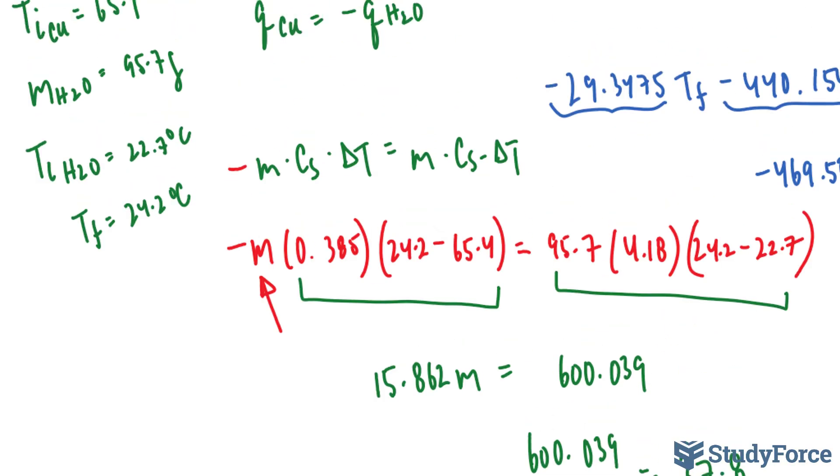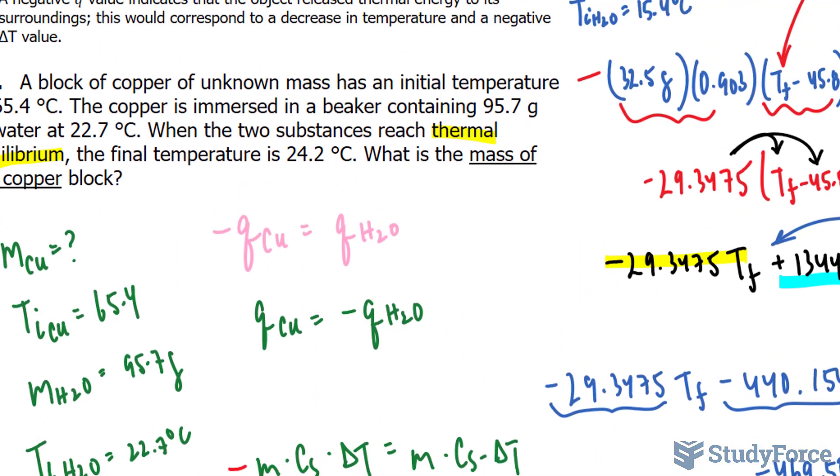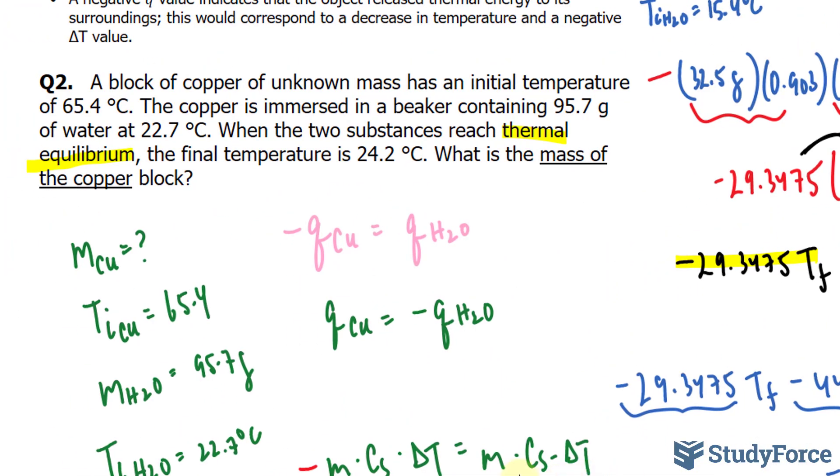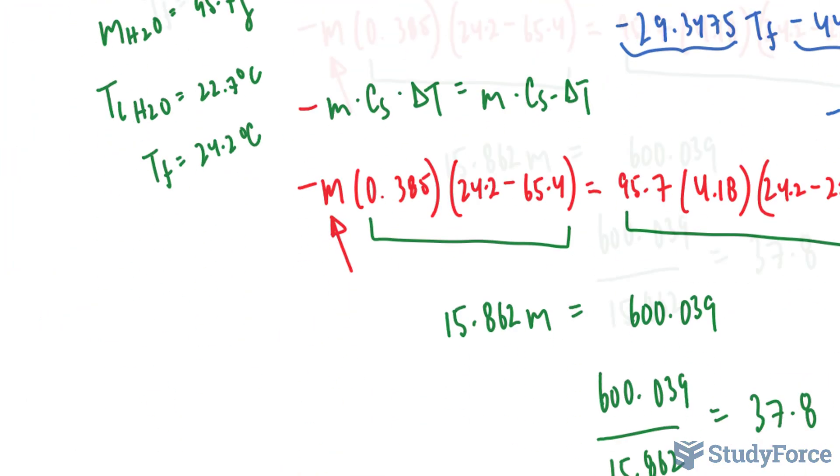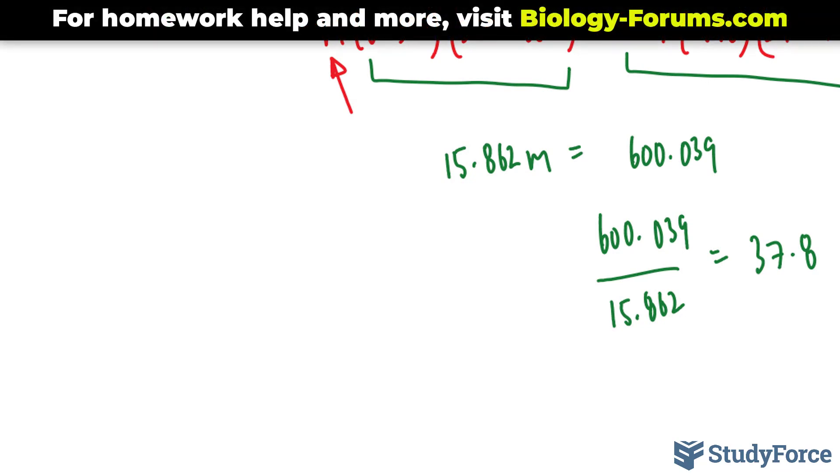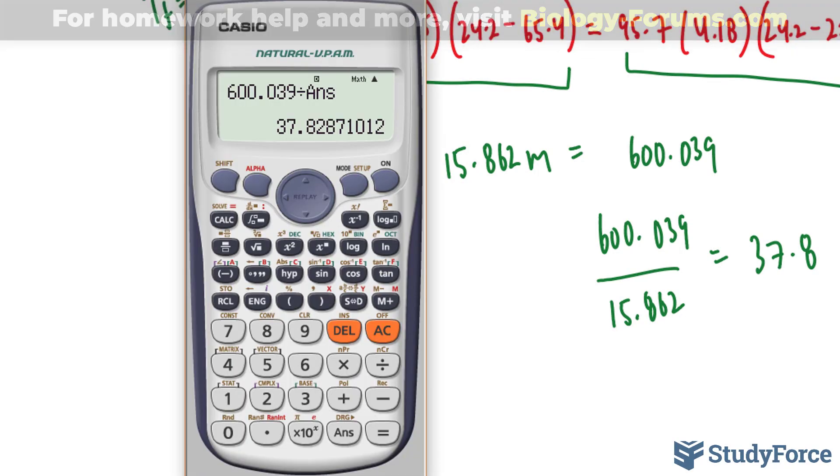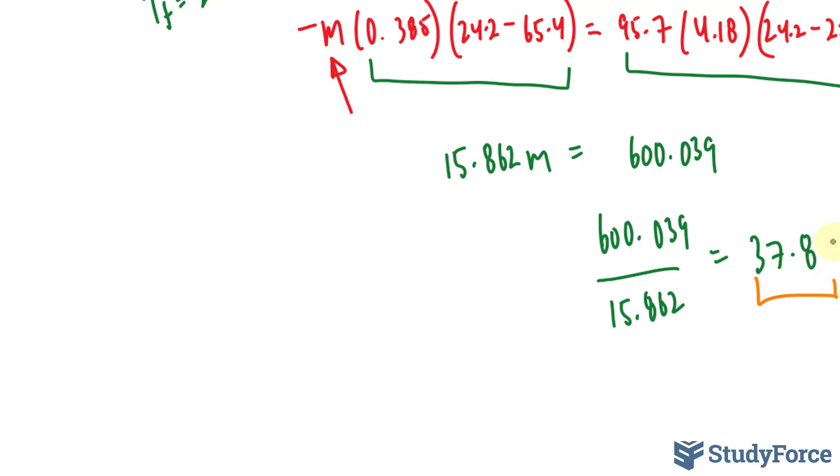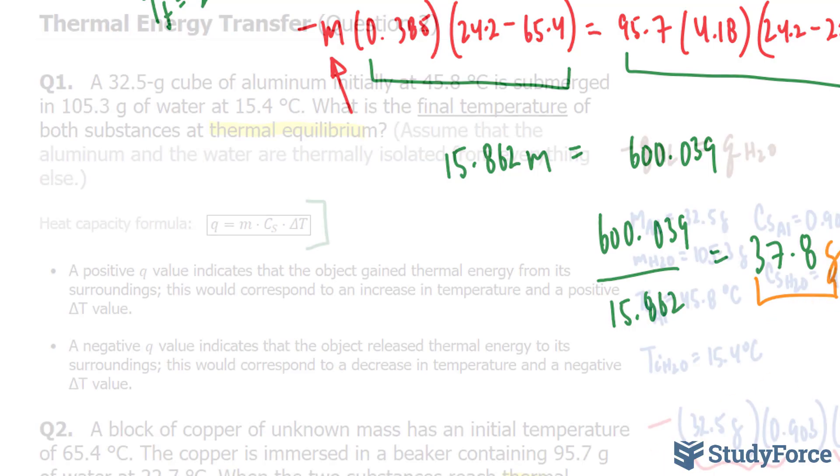To the correct number of significant figures, if we take a look at our initial problem, they gave us three significant figures all throughout. It's a safe bet to use that if you haven't been following the number of significant figures throughout your calculation. So I'm doing a little cheating here, but it will work in this case. So we have 37.8, and it's followed by a 2. We can stop after this 8. The amount of copper here is 37.8 grams. And so there you have it. That is how to solve thermal energy transfer problems.